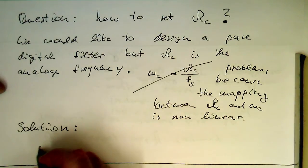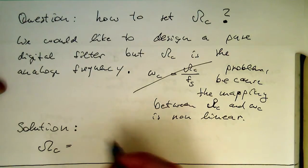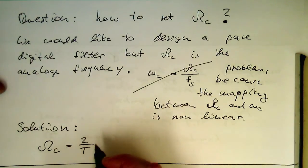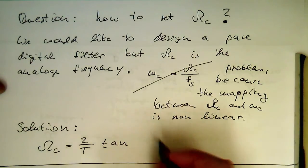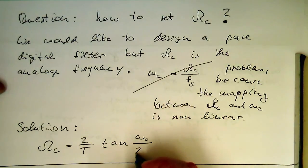So we had already our relationship here, which was omega c equals two, two divided by t, and then tangent of omega c divided by two.